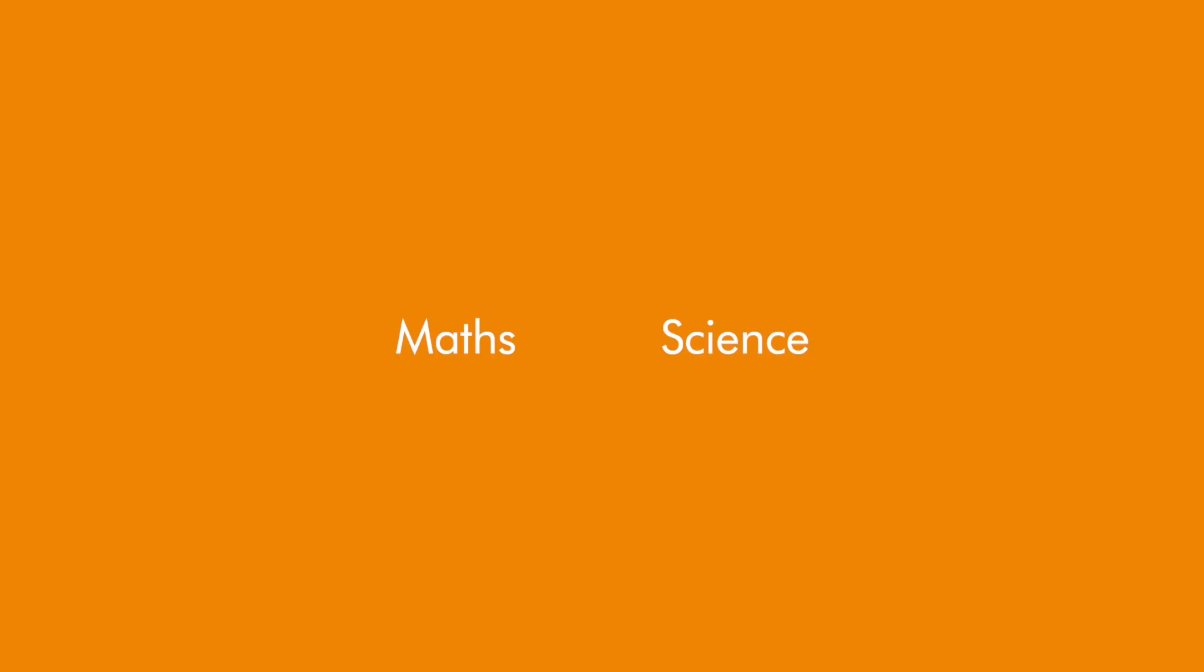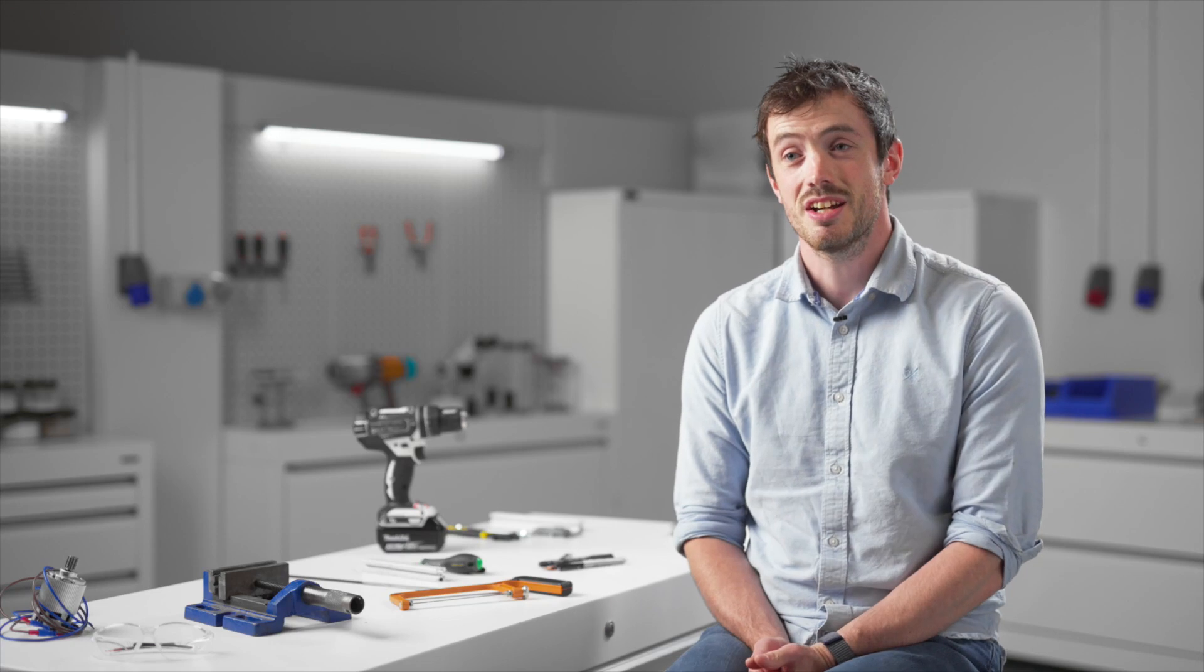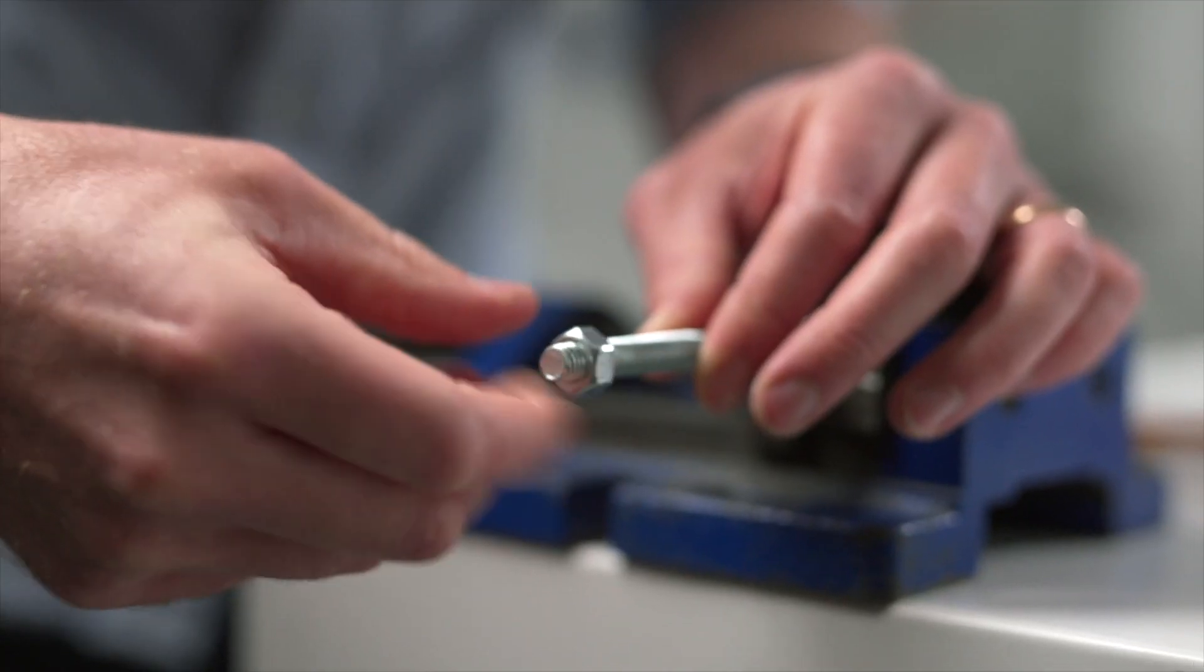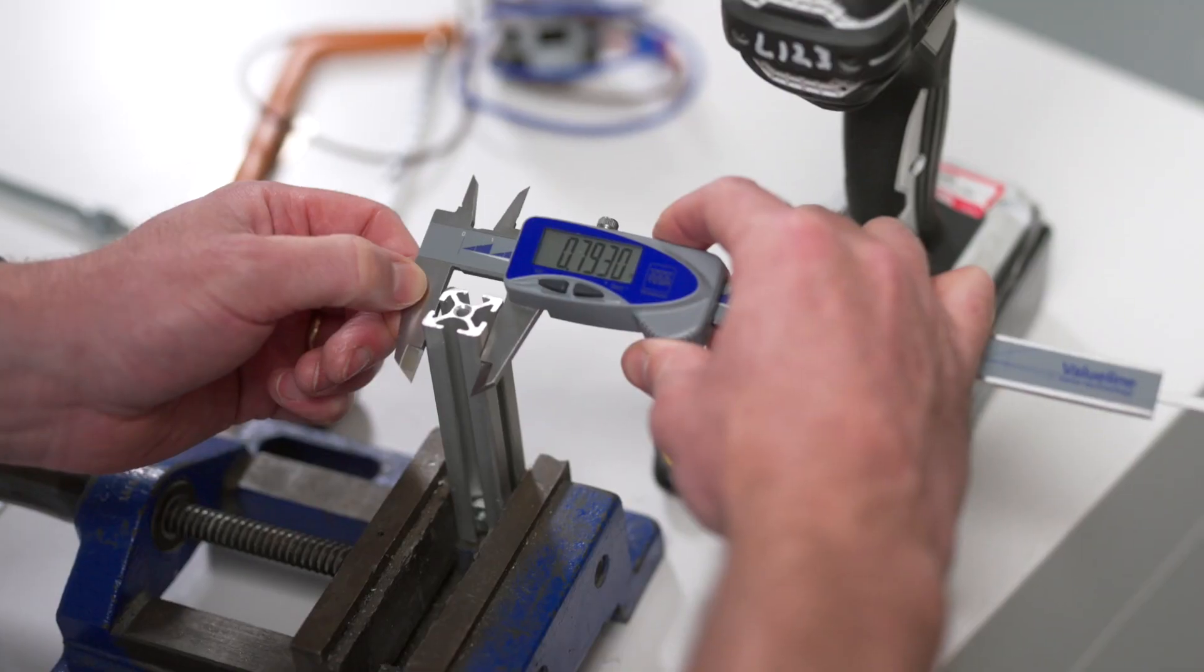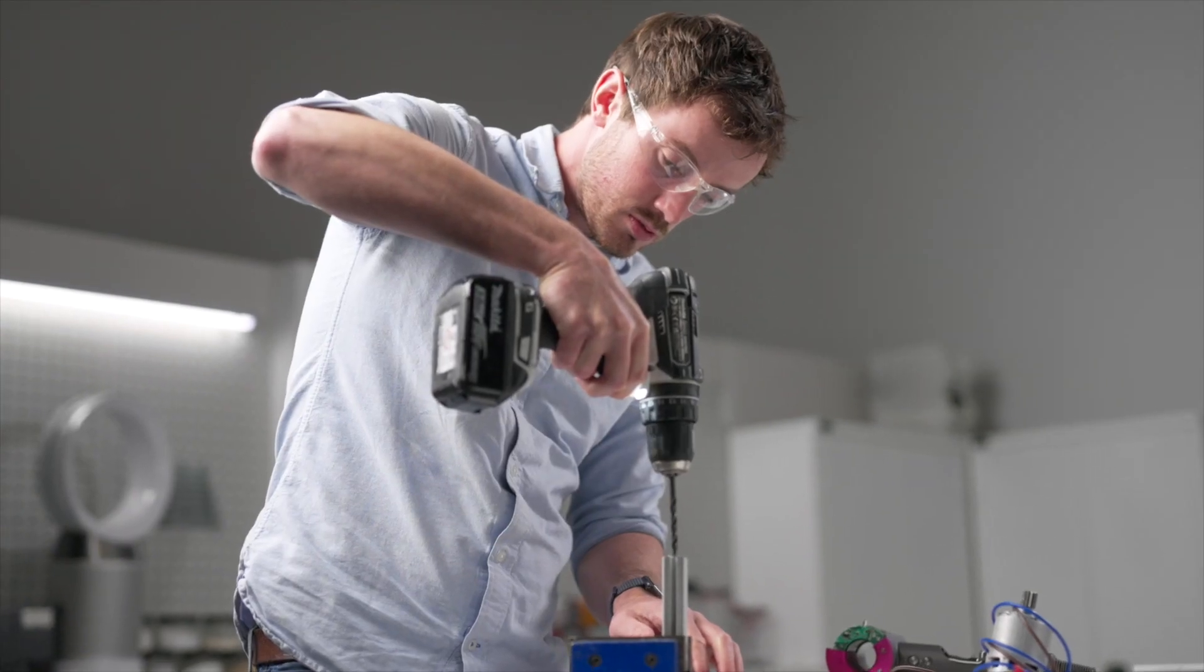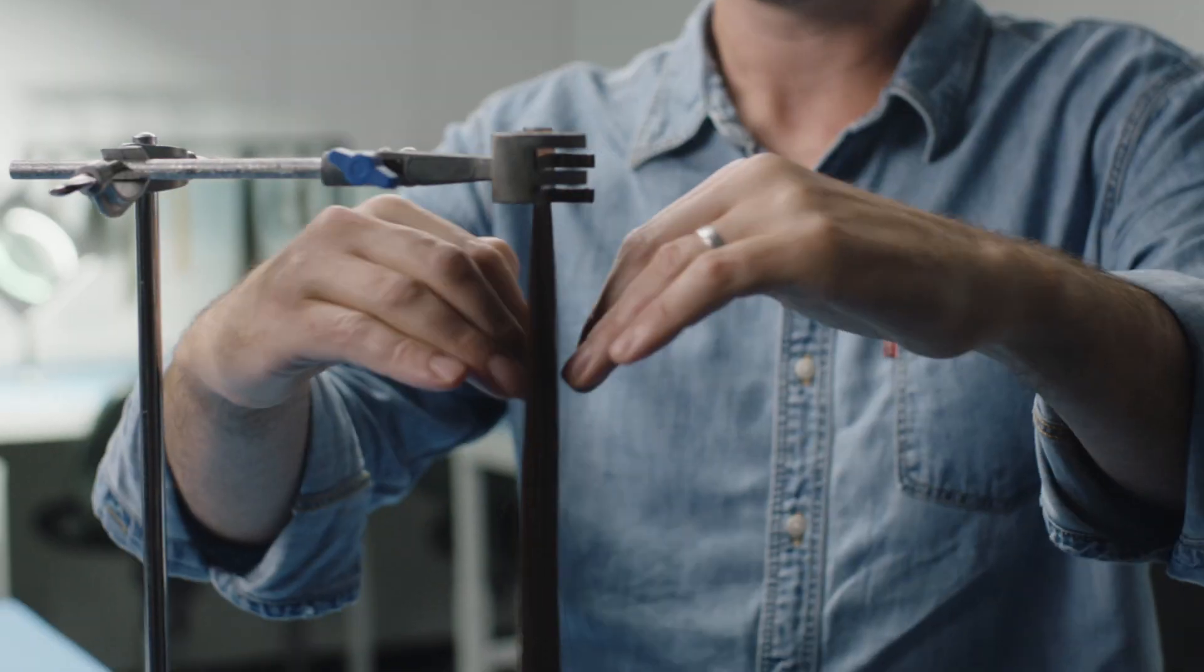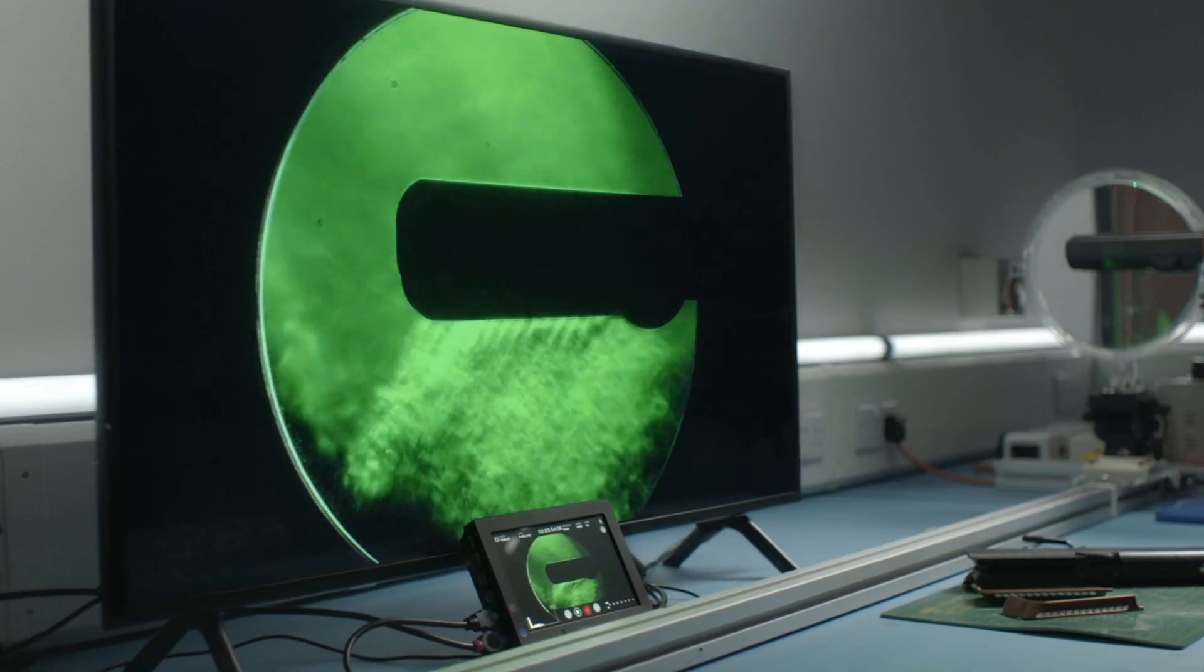I found at school I really enjoyed subjects in maths and science to enable me to help solve problems in the real world. At university, I studied mechanical engineering, and by studying mechanical engineering, it allowed me to apply these principles of maths and science and build real things. Engineering is a great way of understanding how the world works and bringing things to life.